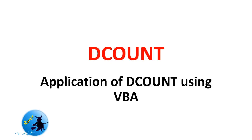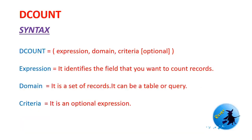First, I would like to explain the syntax of the DCount function. The basic components are expression, domain, and criteria. The syntax looks like this: DCount, then in brackets we have expression, comma, domain, comma, criteria. The criteria is optional.